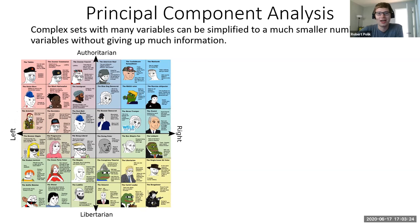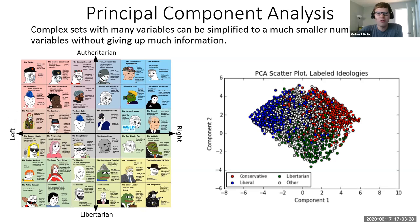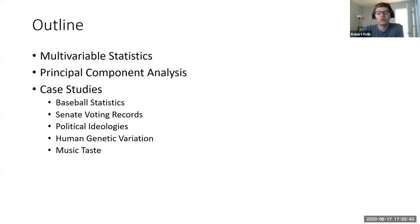With principal component analysis, you can actually dig into it and see that, to some extent, this does reflect reality. When you look at the two most important variables describing people's political interests, you get left and right, libertarian, authoritarian. We'll get into that in more detail, but first we have to introduce principal component analysis itself.